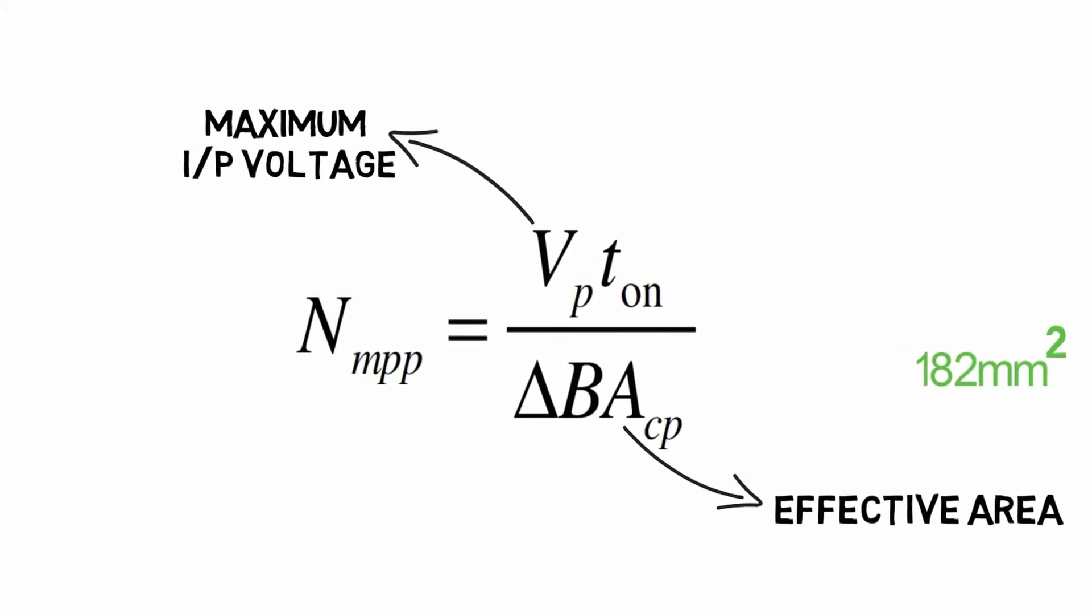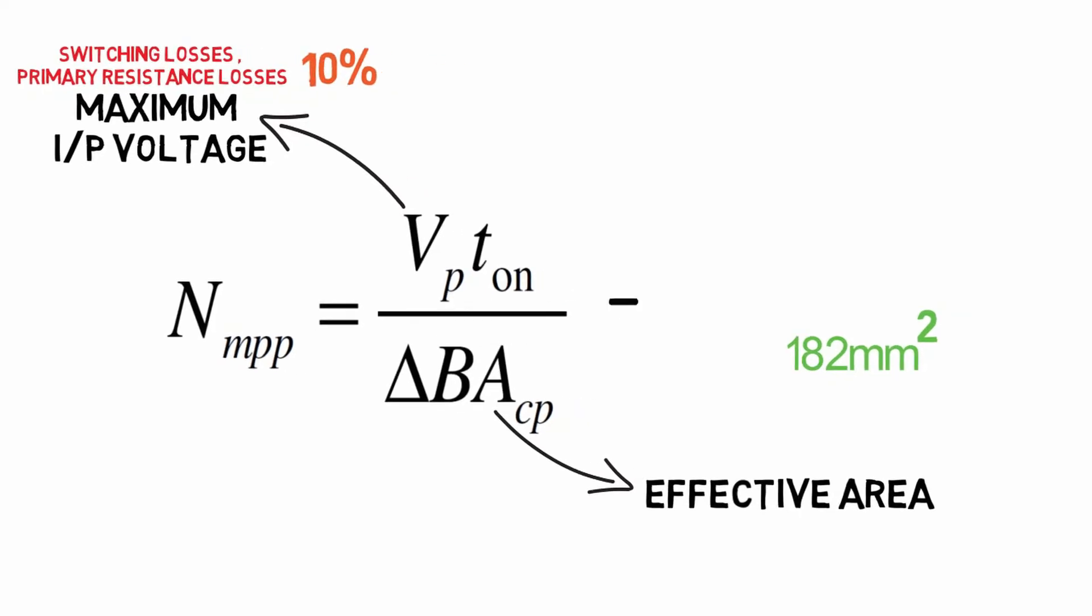For primary side we have to consider switching losses and primary resistance losses. Let's consider them as 10 percent of the input voltage. Hence Vp will come out as 180 volts. This maximum flux density of the core ranges from 120 milli-tesla to 220 milli-tesla and it is decided by the designer. In our case we will consider this value as 180 milli-tesla.